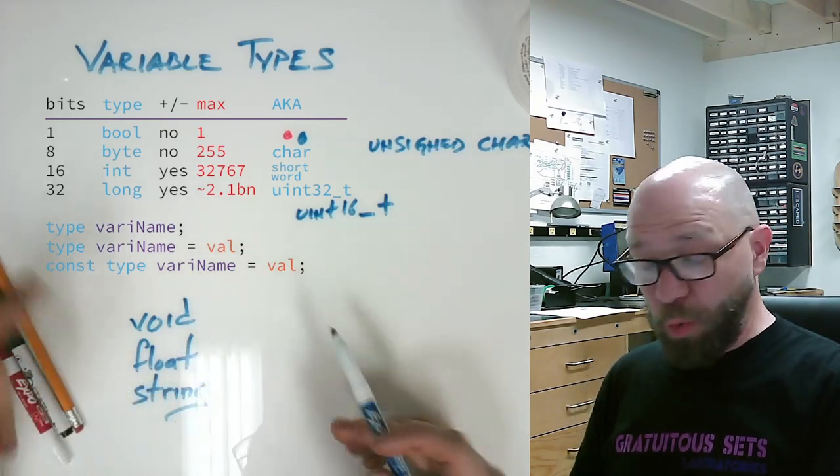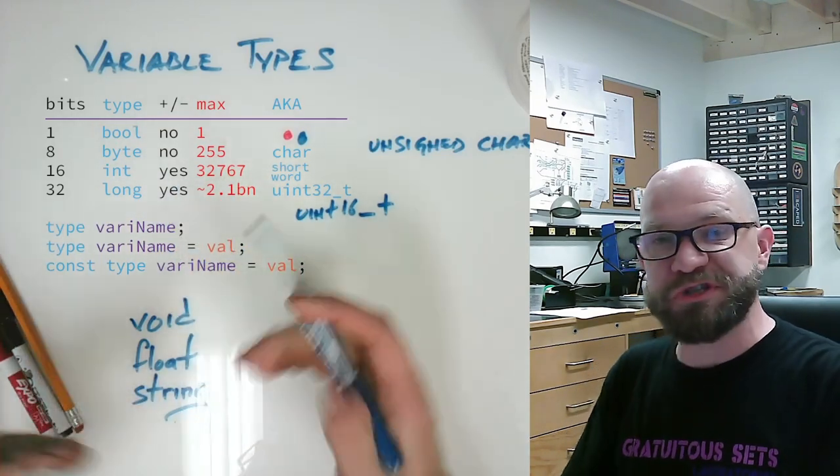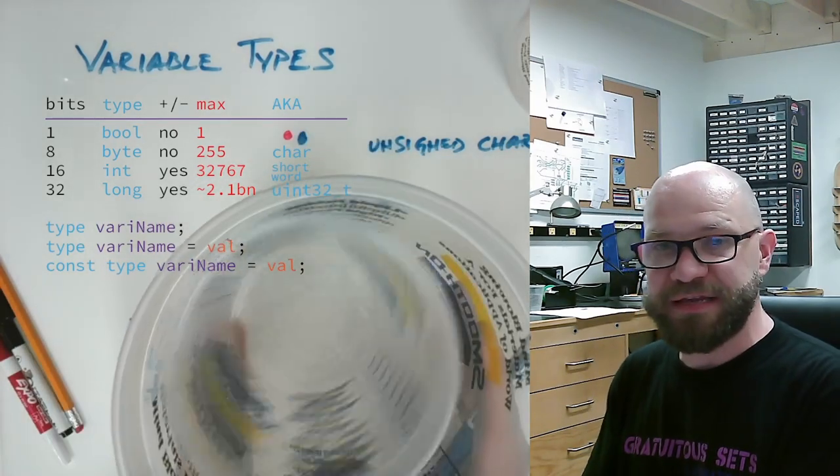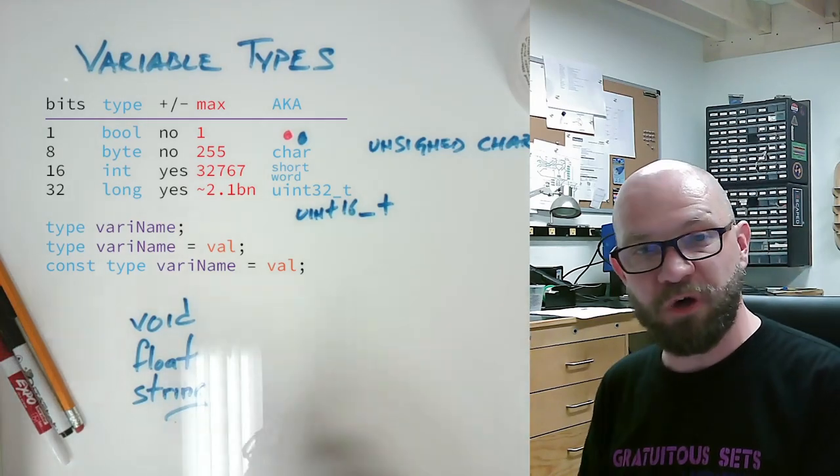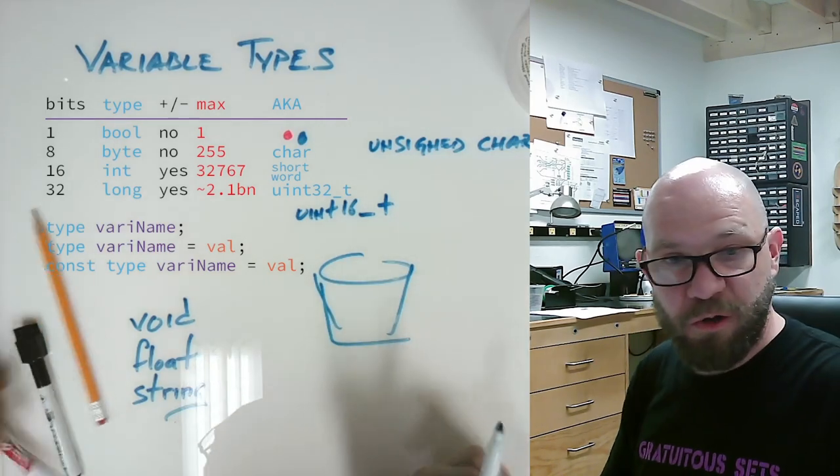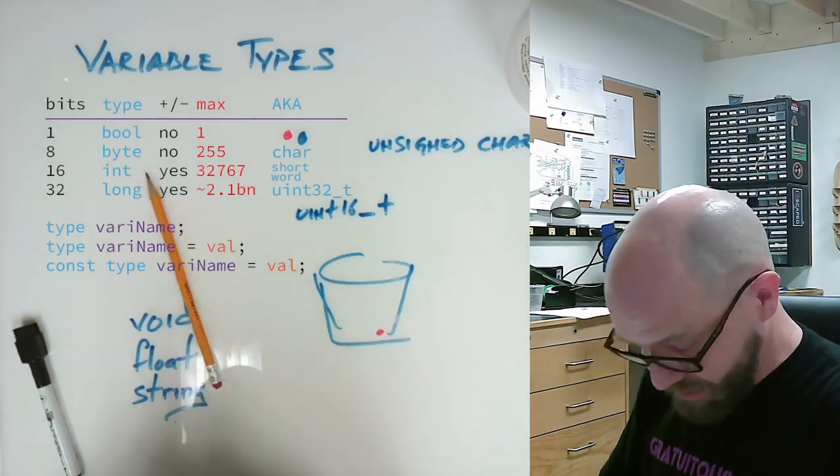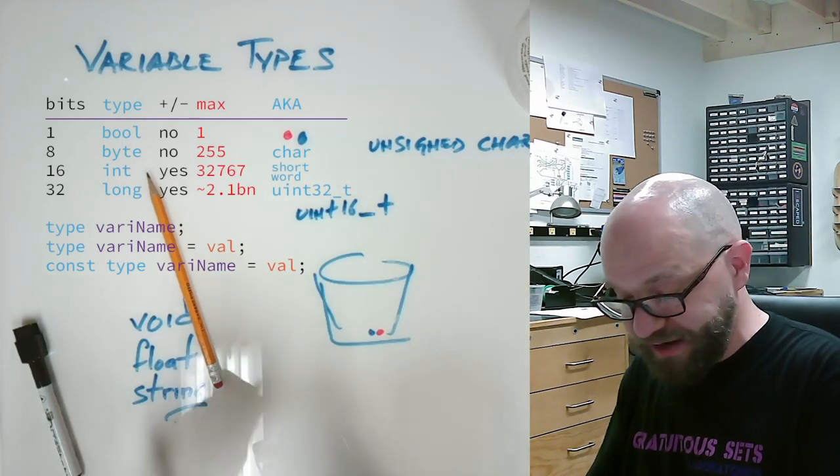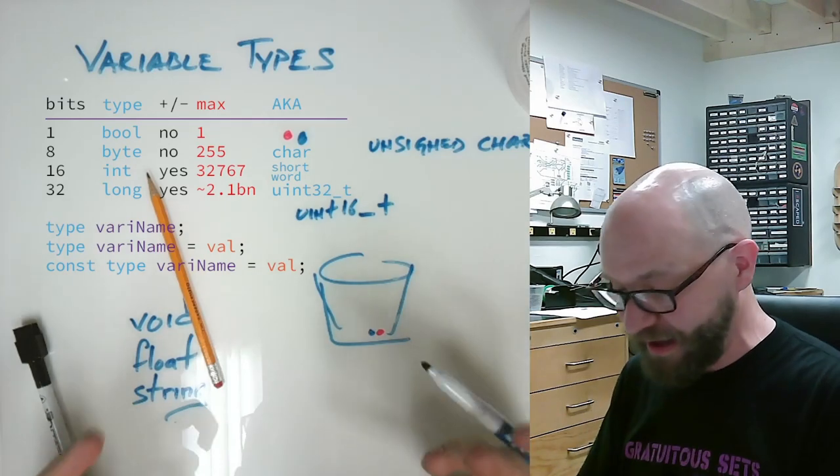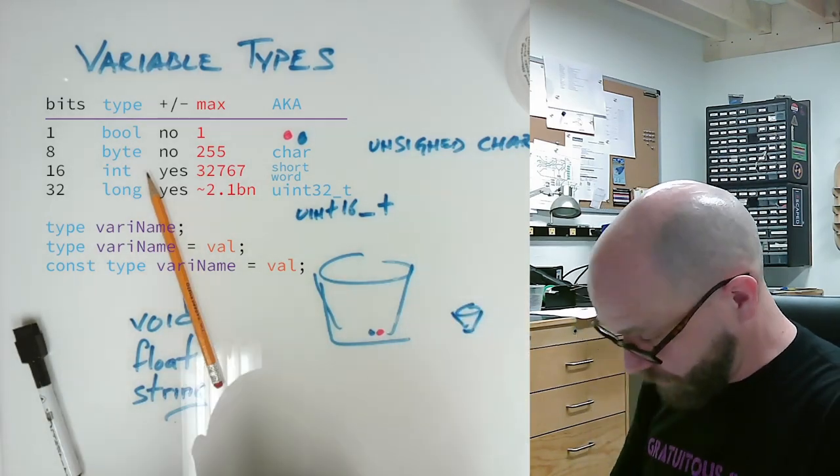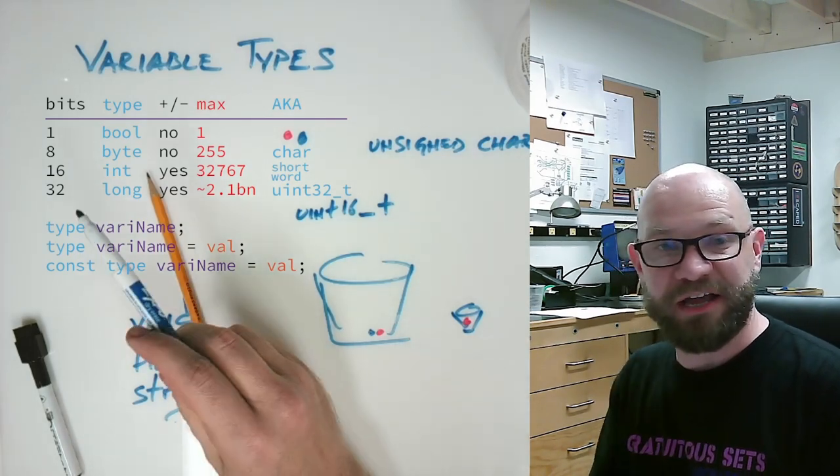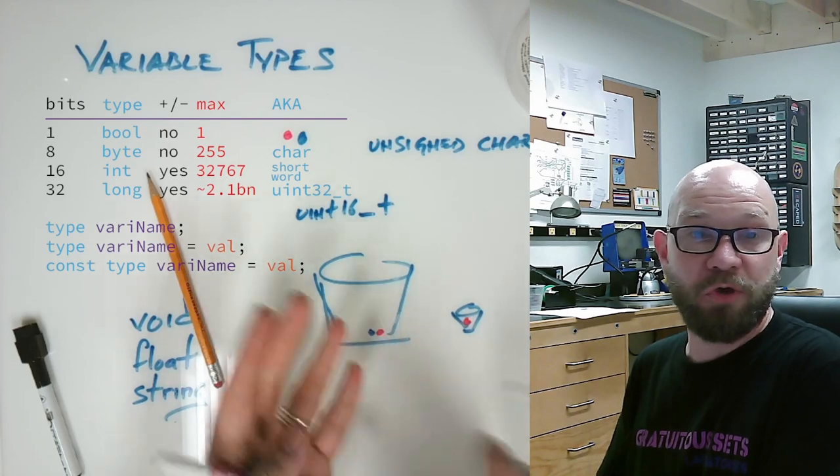When you are choosing what variable type to use, you want to use the smallest one you can get away with. Because every time you call one of these, it's calling the entire bucket. So if you only need a few bits of data and you're using a long, you've got this whole big bucket of data and you're only using a couple pieces of it. But the software is essentially lifting this whole thing as if it were full and is having to do more work. So if you only need that little thimble or shot glass size for the byte, that's what you want to call your variable as.